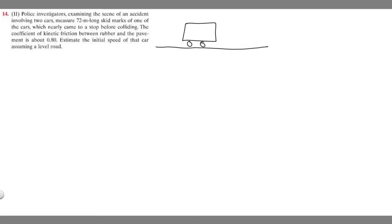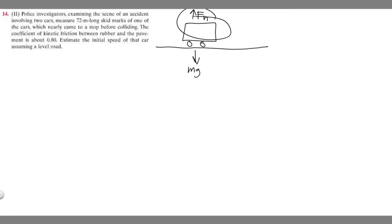What forces are acting on this car? We know we're going to have a weight force going straight down, which is equal to m times g. Since the car is touching the road, we have another force going up, which is the normal force — anything touching an object perpendicular to it has a force F sub n. And there's going to be friction in this problem. If the car is traveling in one direction, the friction force F sub f acts in the opposite direction, because friction slows you down when you try to move.